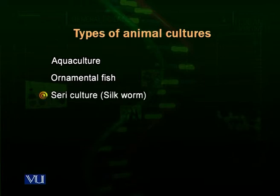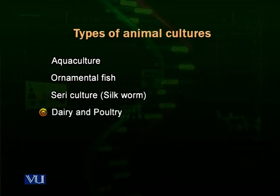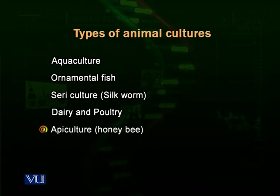We use the specific term sericulture for growing silkworms to make silk. We also have dairy and poultry industries — dairy for getting milk and poultry for getting eggs or protein. Apiculture is honeybee keeping, where we culture honeybees to get honey.